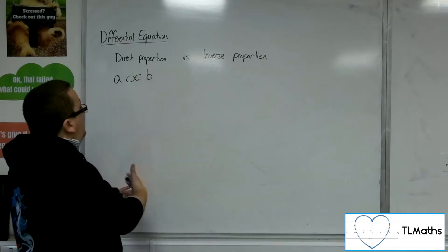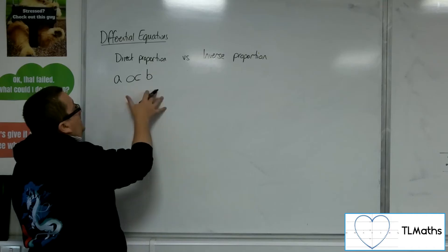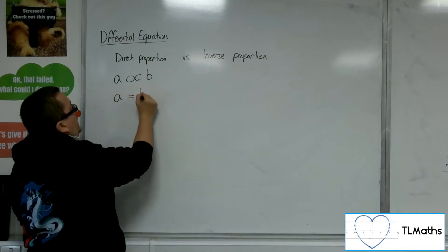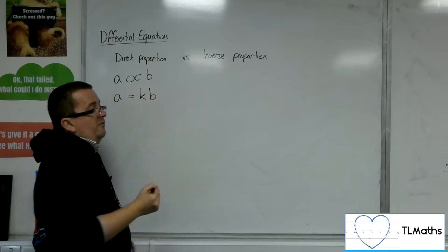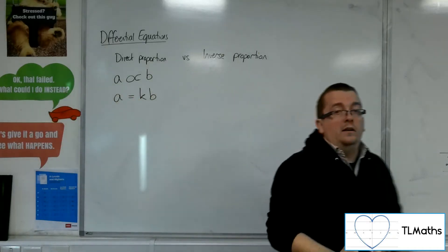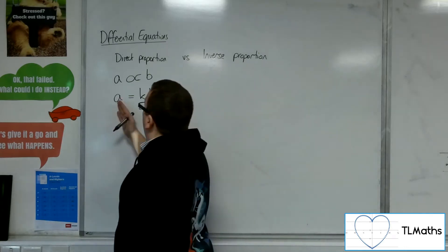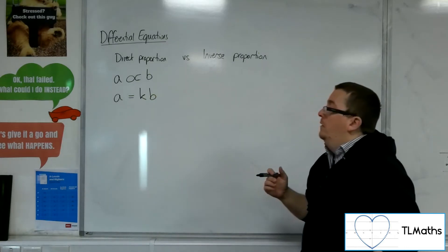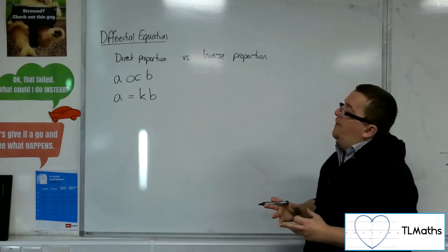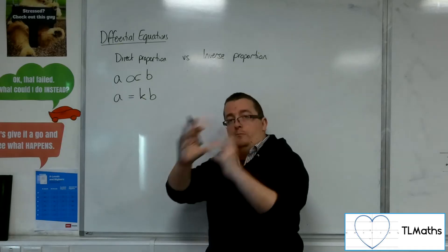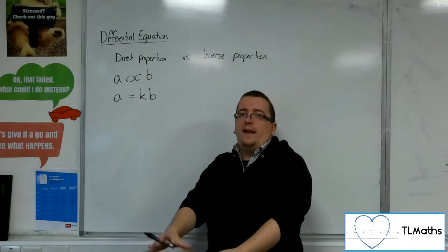So what we can then say is that if A is proportional to B, then A is going to be equal to some multiple of B. And that will enable us to figure out how they are connected. Part of the problem that we might then face is working out that value of K.